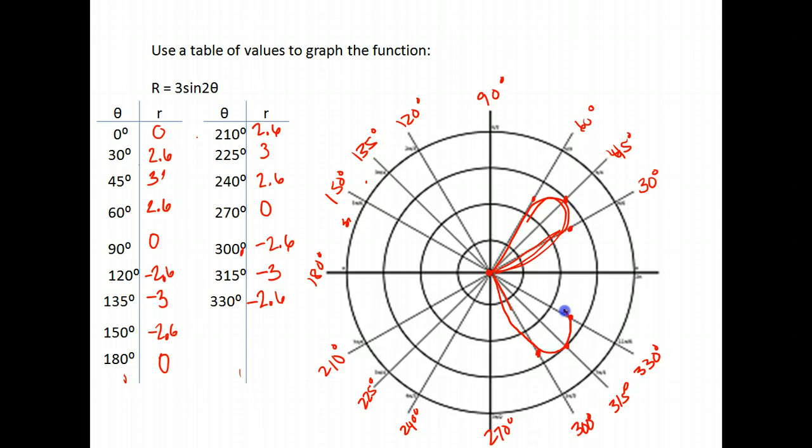Now it's safest to go ahead and graph some or plug in some values between these just to make sure that's what happens. When we get to 210, we get 2.6. So we open up to 210, we go out 1, 2.6. 225, we open up to 225, and from the center, we go towards that angle, 1, 2, 3.